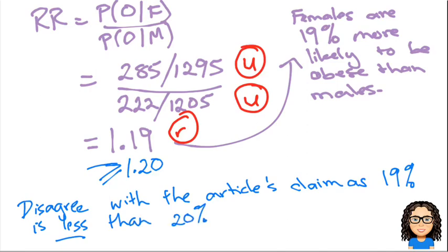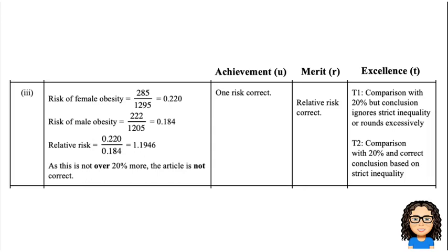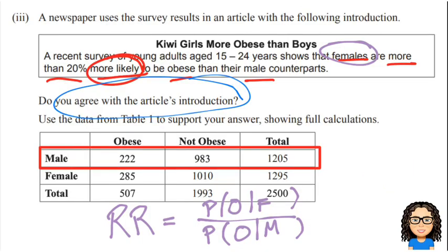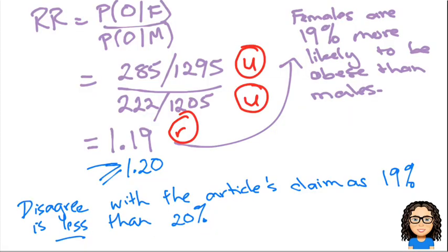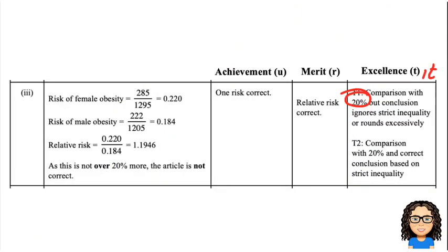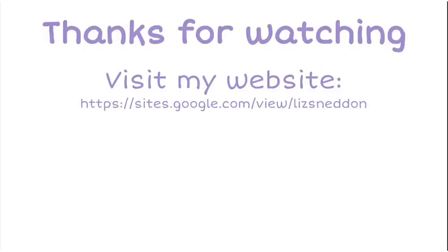Getting through to that conclusion and comparing with 20% earns Excellence. Note the inequality: the article says 'more than 20%', so it should be strictly greater than, not greater than or equal to. Because our result doesn't meet that threshold, we disagree. Thanks for watching — there's a link to my website and a playlist of other videos in this series.